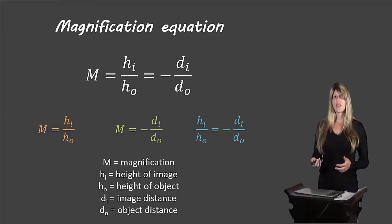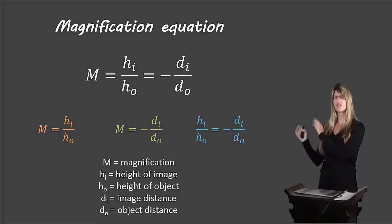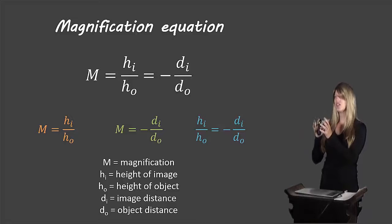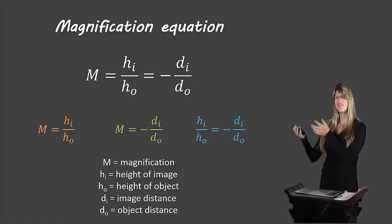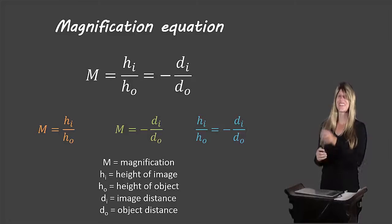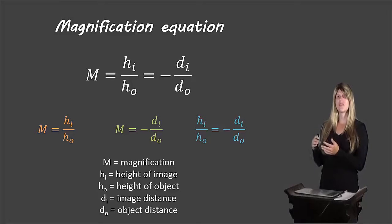Let's take a look at the magnification equation, starting with the one in white — this is the standard format. You can see there are two equal signs within the equation, meaning we can split it into several pieces. Magnification is equal to the height of the image over the height of the object. It's also equal to the negative of the image distance over the object distance.